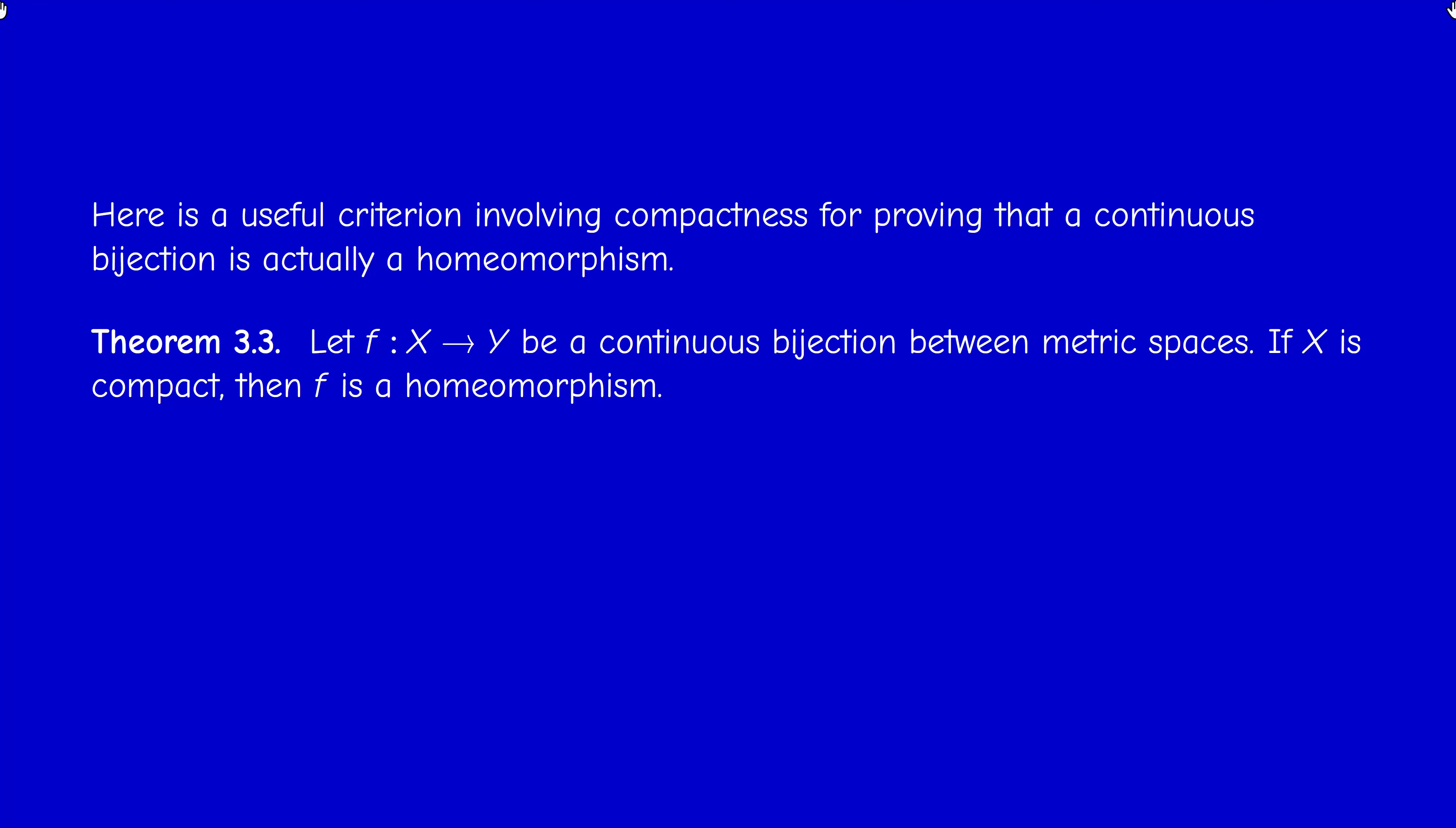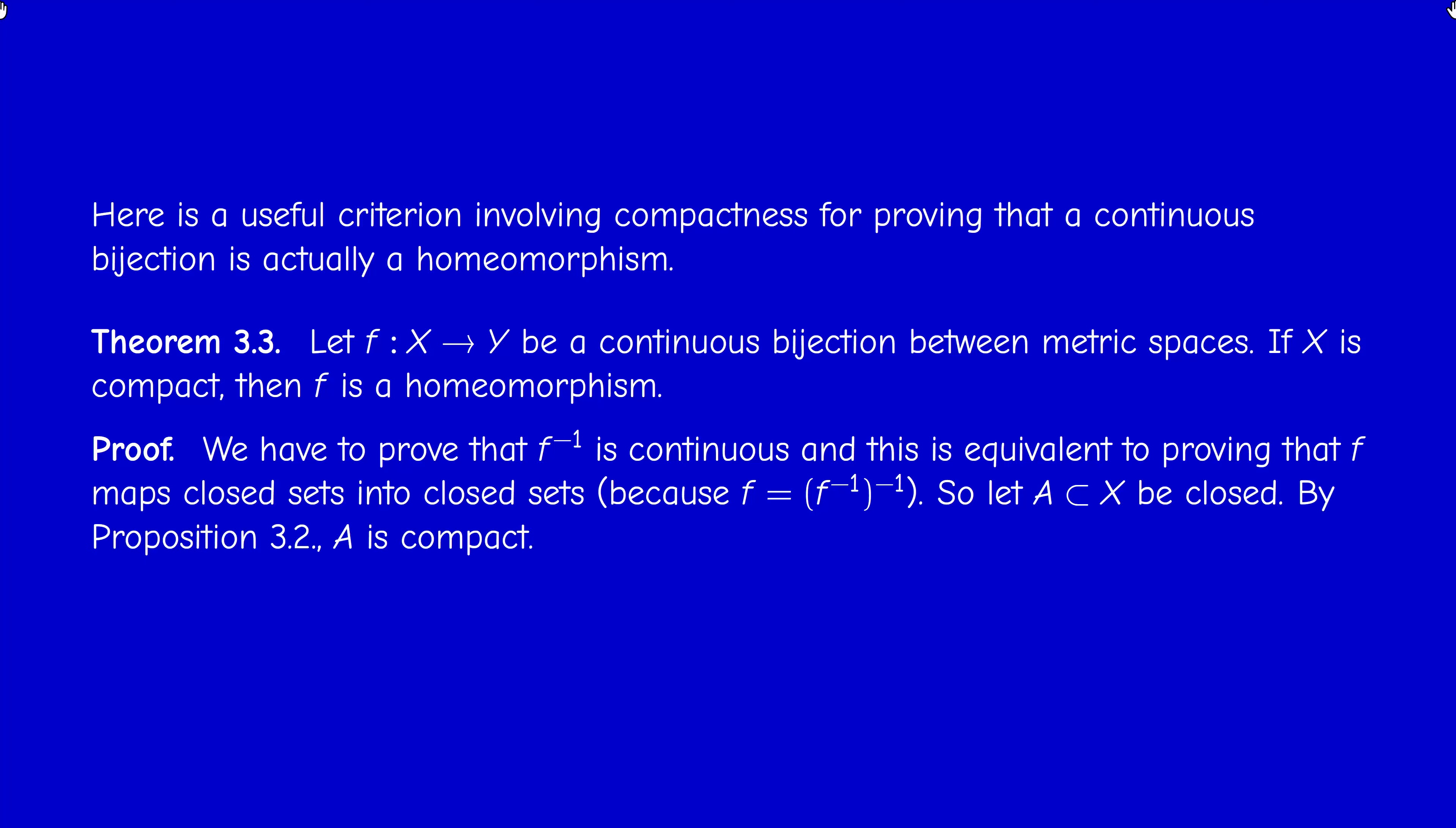So why is this true? Because to prove that f^{-1} is continuous, what does it mean that f^{-1} is continuous? It means that the inverse image of f^{-1} of a closed set is a closed set. But the inverse image of f^{-1} is just f, because f is a bijection. So it's enough to prove that f is a closed map, or maps closed sets into closed sets. So pick a closed set A in X. Since X is compact, according to a previous result, A itself is compact.